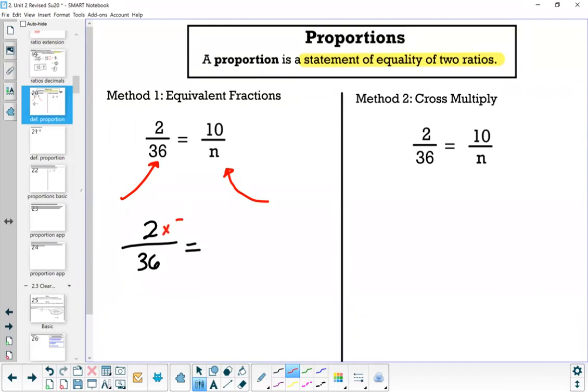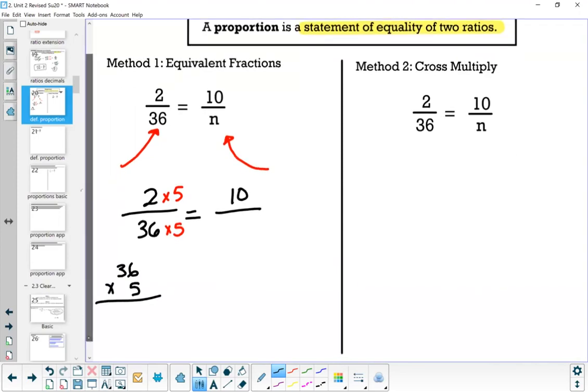Well, multiply the 2 by 5. So that means I would multiply 36 by 5. And that would give me 10 over, let's do the math. Notice how I'm writing my work down. Some of you guys on your quizzes, work like this was missing, which makes me wonder if you're using a calculator. I hope not.